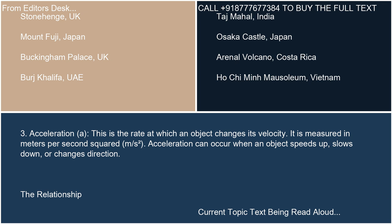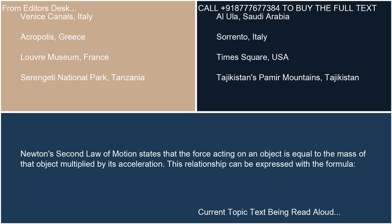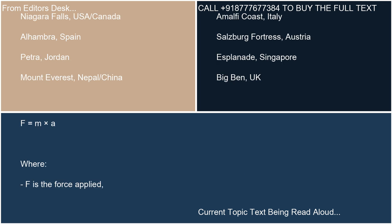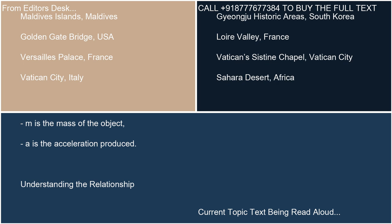Newton's second law of motion states that the force acting on an object is equal to the mass of that object multiplied by its acceleration. This relationship can be expressed with the formula: F equals m times a. F is the force applied, M is the mass of the object, and A is the acceleration produced.